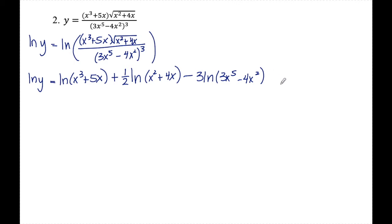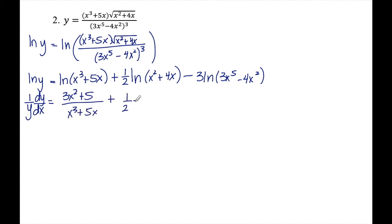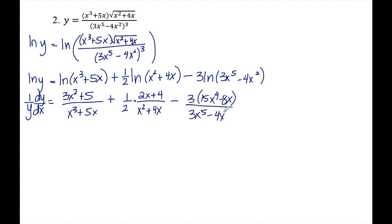Now I differentiate the entire equation with respect to x. The derivative of ln(y) is (1/y)·(dy/dx). For each term I use the u′/u rule. In the first term, u′ is 3x² + 5 and u is x³ + 5x. Then I have one-half times u′ = 2x + 4 over u = x² + 4x. Finally, 3 times u′ = 15x⁴ − 8x over u = 3x⁵ − 4x². I simplify the second term by factoring out 2 from numerator and denominator, leaving 1 over 2, and the rest cannot be simplified further.